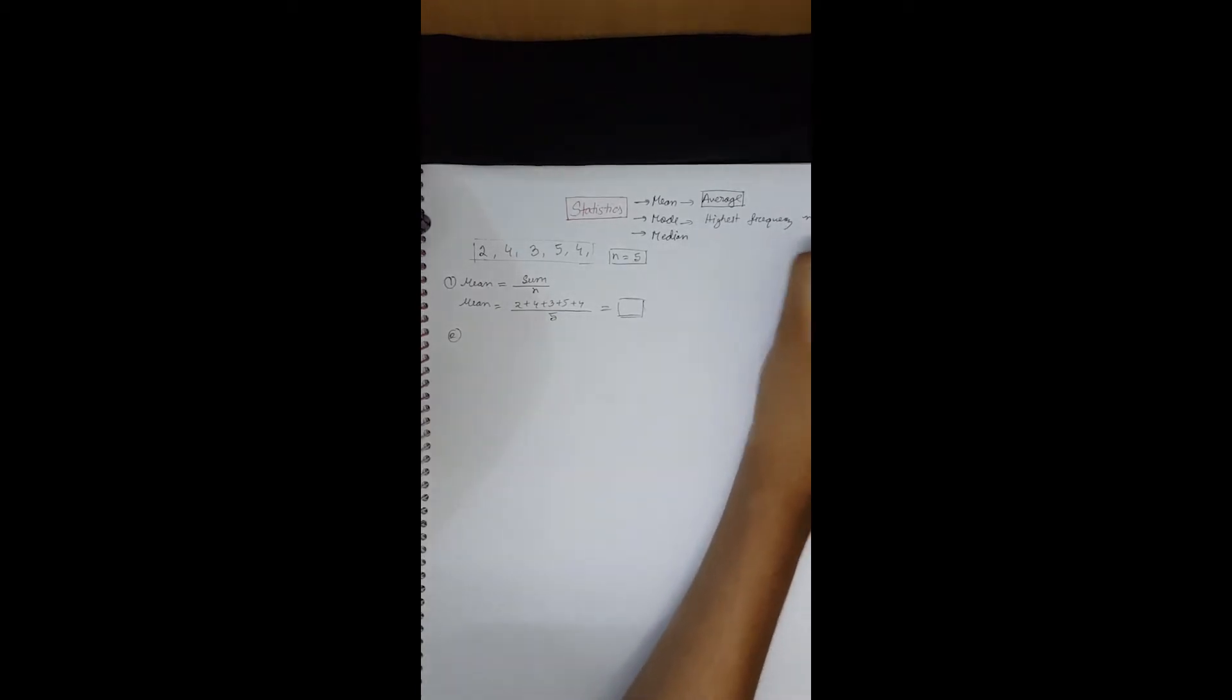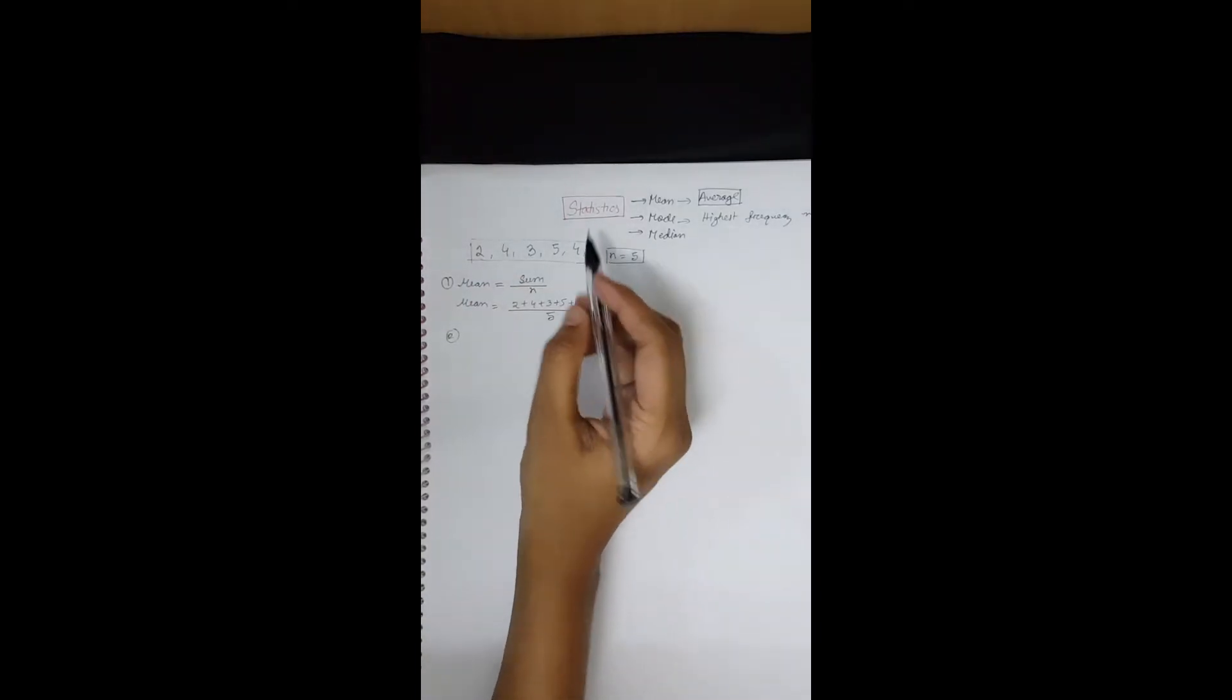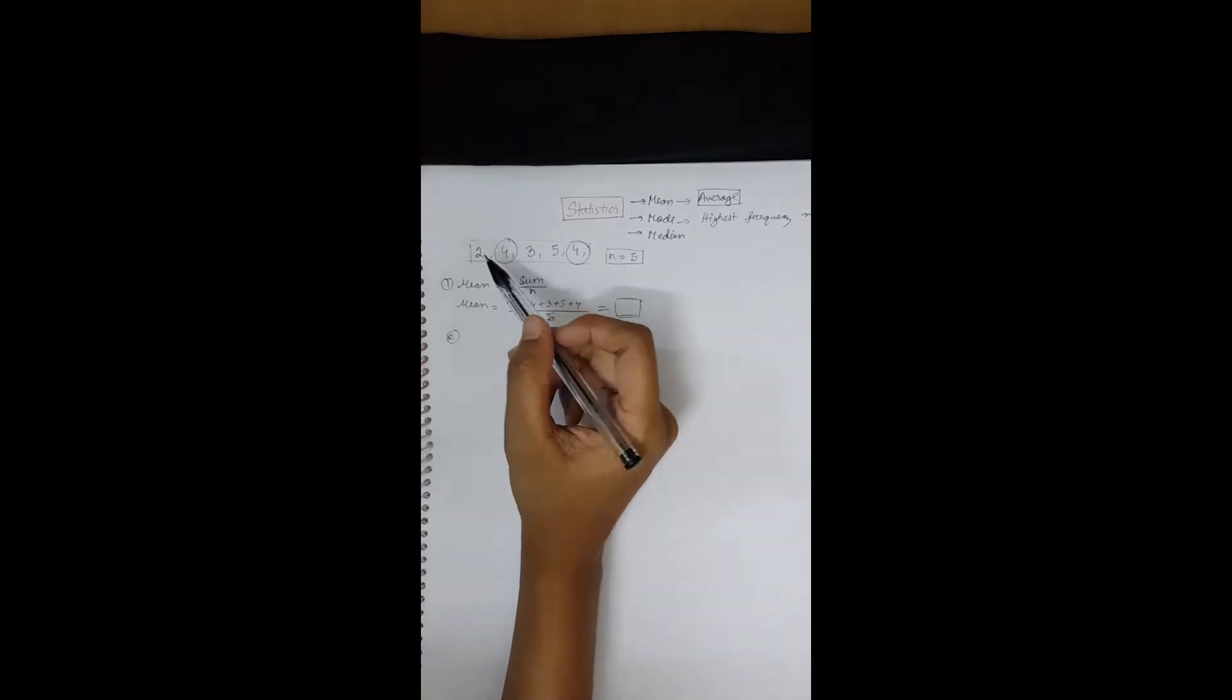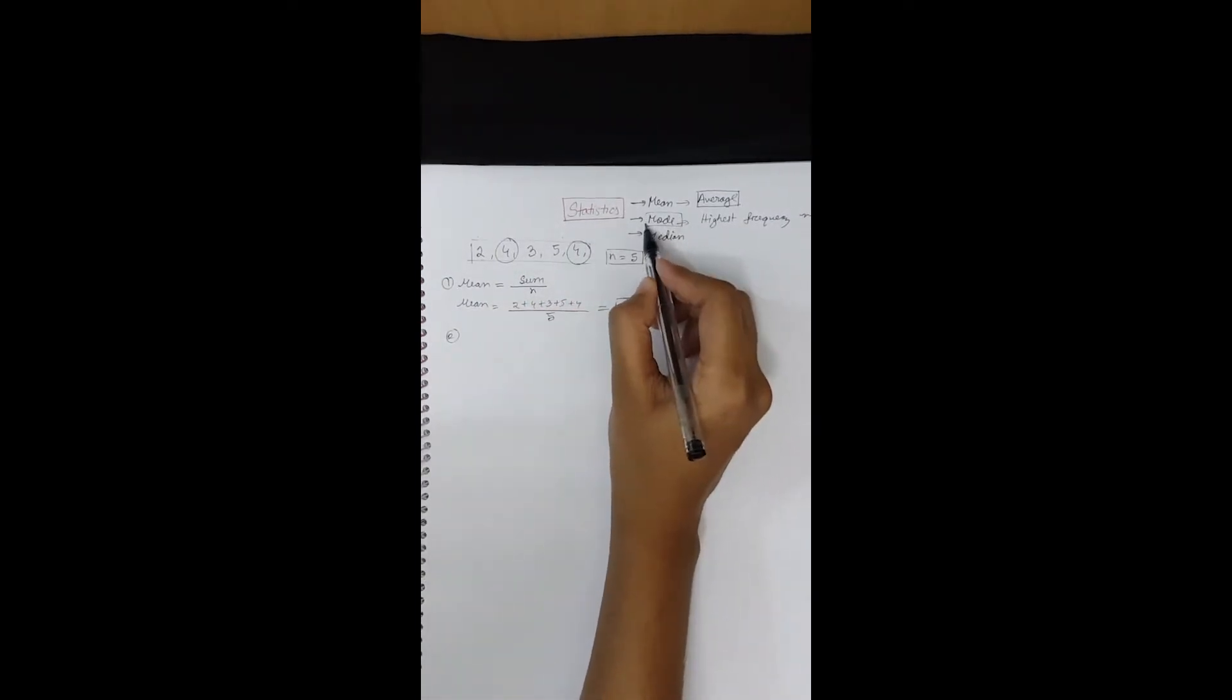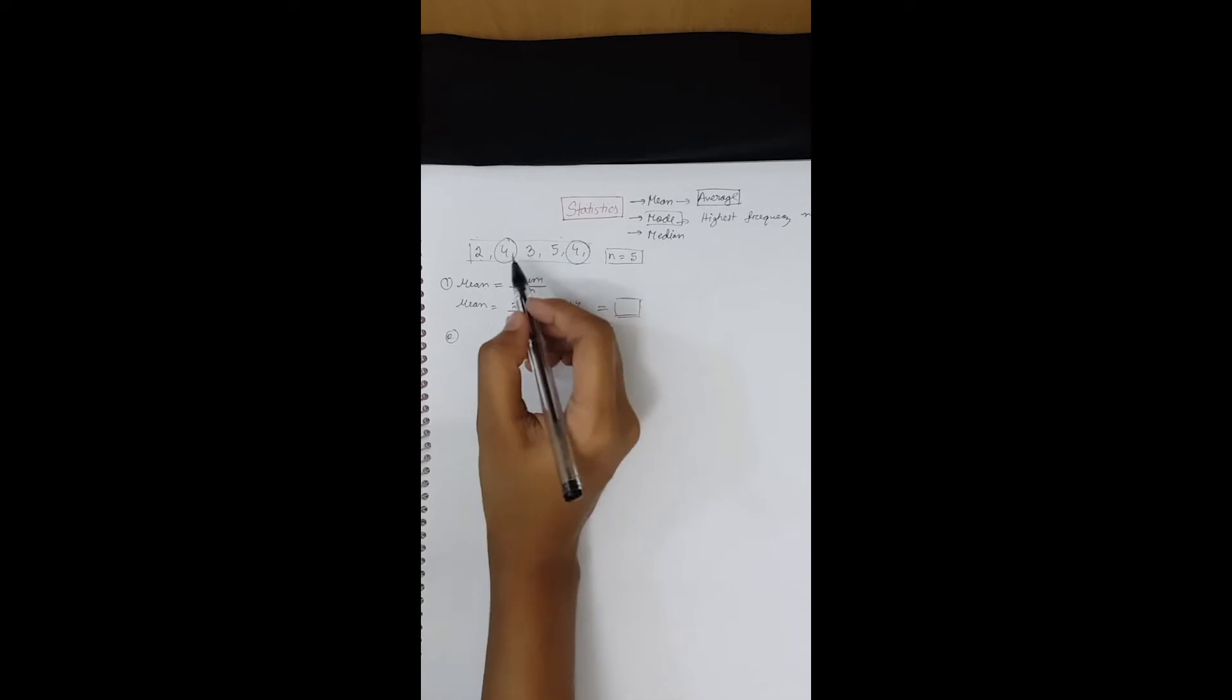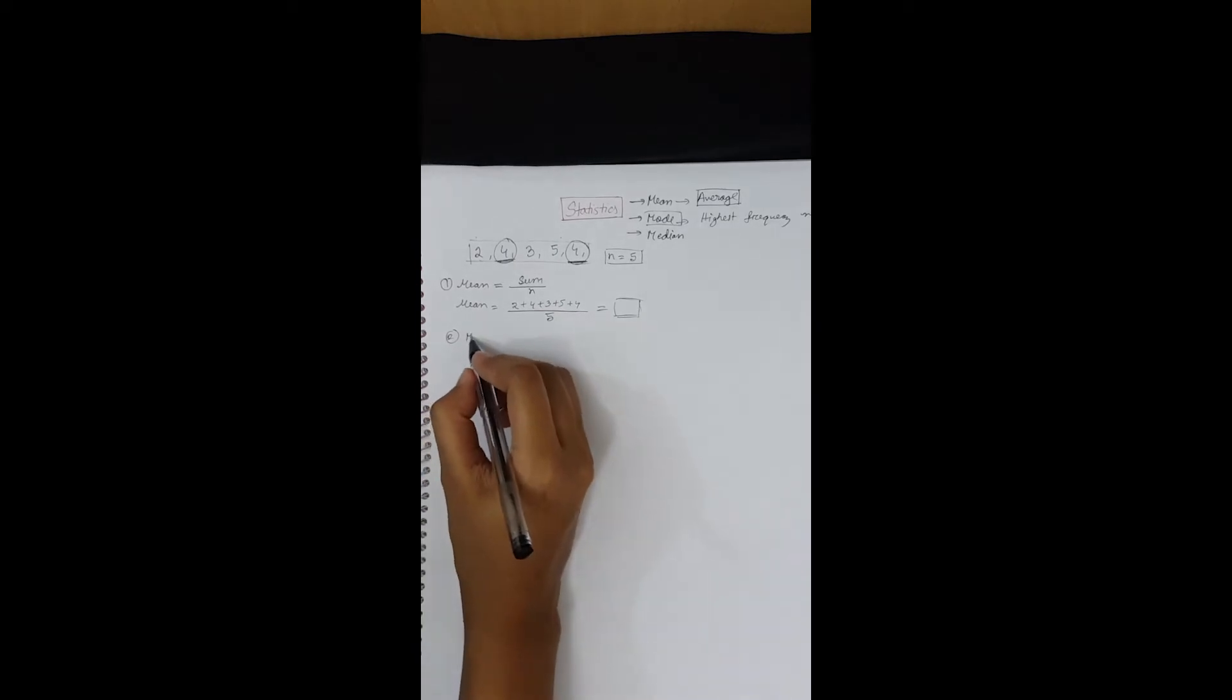Number two is mode. Mode is the highest frequency number. Highest frequency number means out of the five data, only 4 is repeated. Other data, for example 2, 3, and 5, are scored only once. So to find the mode of any given data, you need to identify the number which is repeated for the maximum number of times. In this case, mode equals 4.